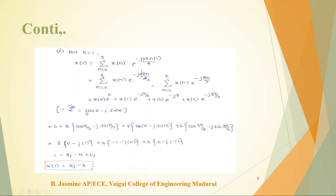For the expansion, x(0)·e^0 = 0·1 = 0. For n=1: 2·e^(−jπ/2) = 2·(cos(π/2) − j sin(π/2)). Similarly substitute for n=2 and n=3 using cos(π), sin(π), cos(3π/2), sin(3π/2). Simplify using the calculated values and we get X(1) = −4 + 4j.